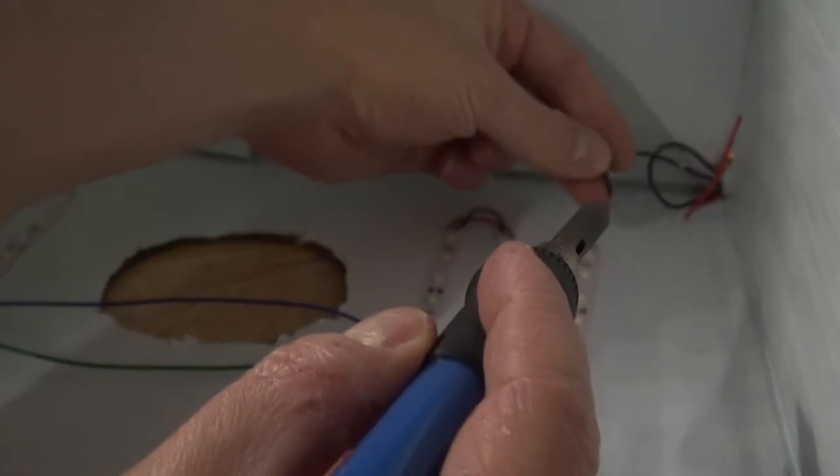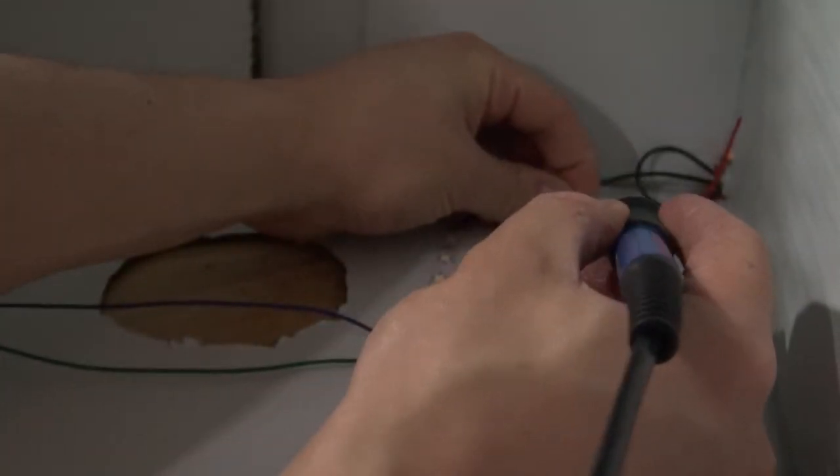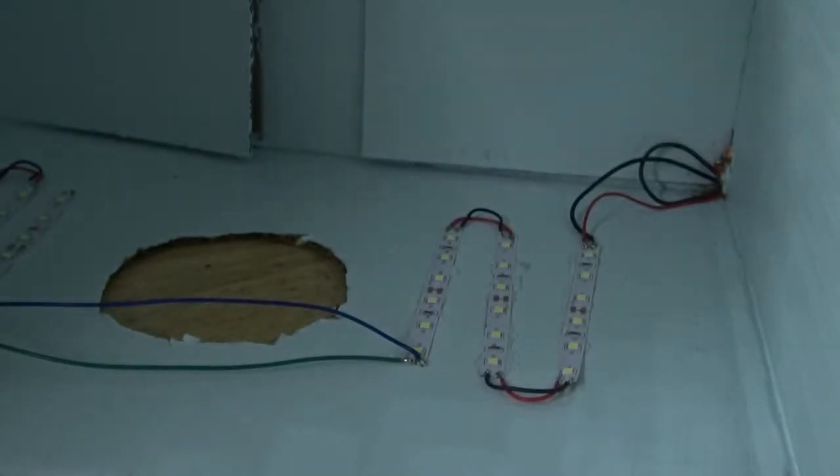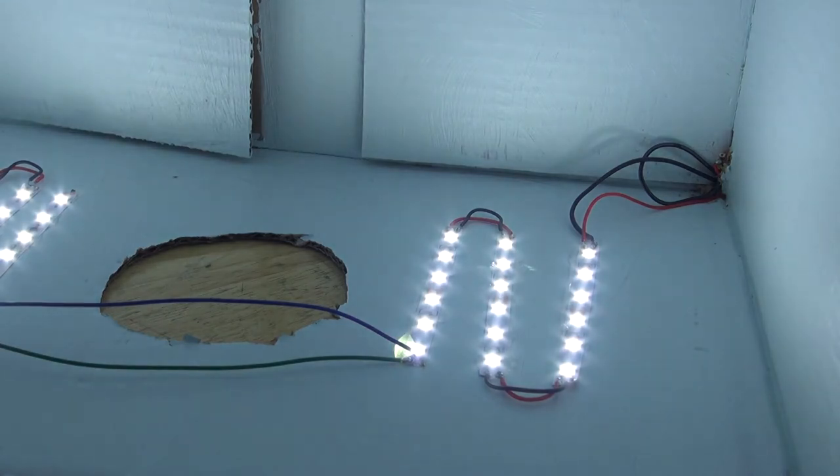Next, take the two input wires and solder them to the input of the LEDs. And there, it should look just like this. Now it's time to test it out. Plug it in, and there, as you can see, it works.